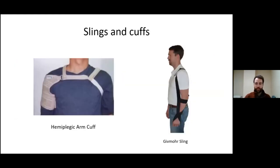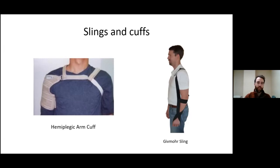Many types of slings and cuffs have been developed to suit varying presentations of function, and different types would be prescribed by Allied Health, OT or PT. Examples include an arm cuff or the Gimbal sling, which gives support and allows the arm to move in a more neutral and normal movement pattern.